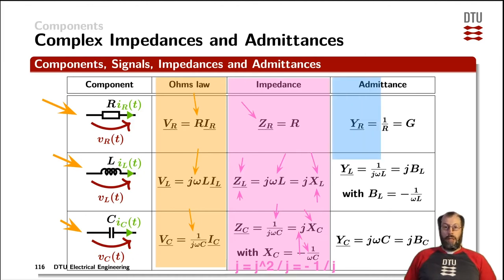Finally, the last column of the table is showing the admittance of all these components. The admittance of a single resistor is equal to 1 over the resistance of that resistor, which equals the conductance.